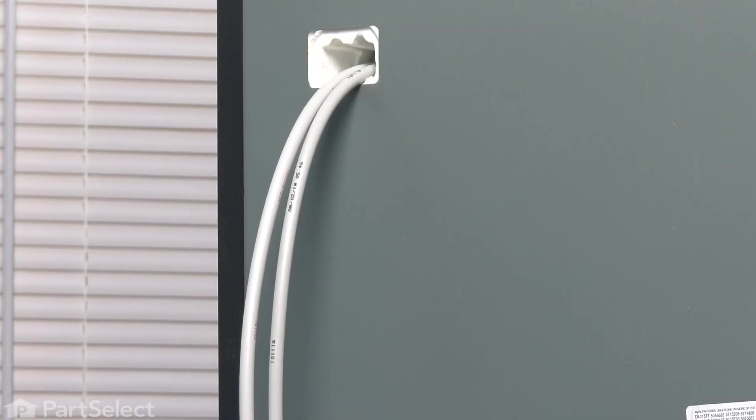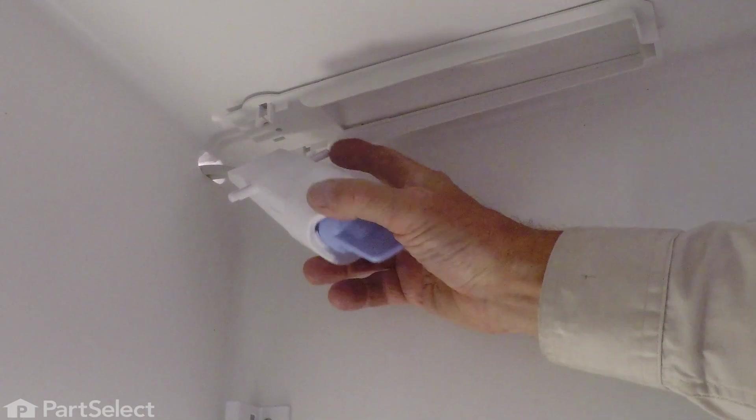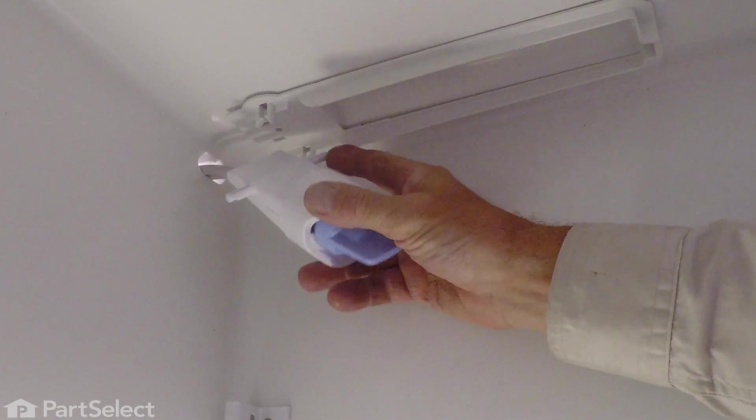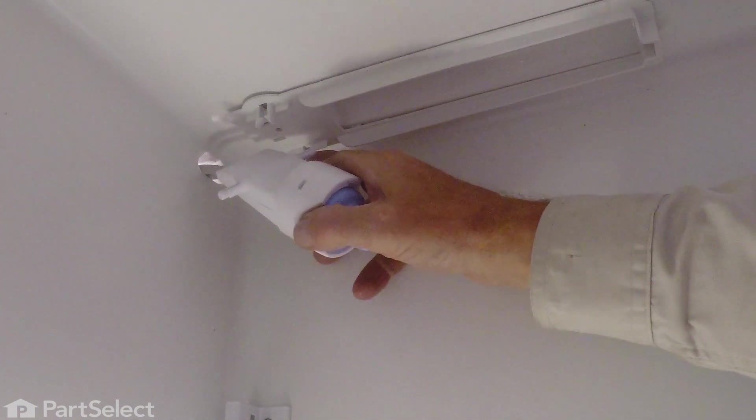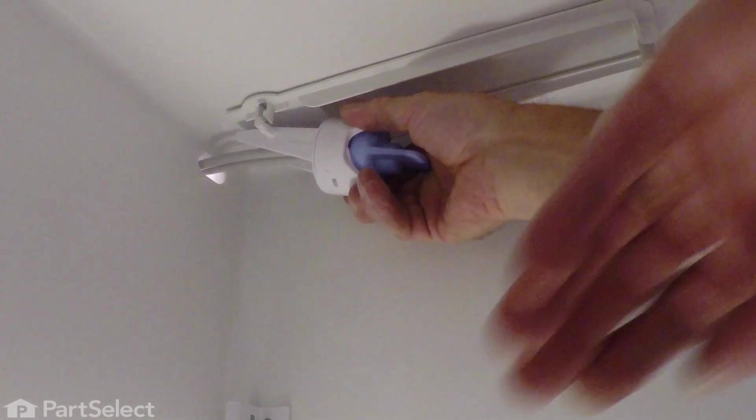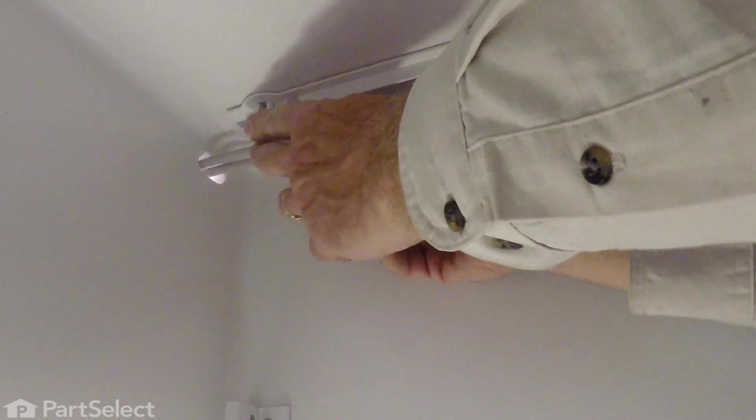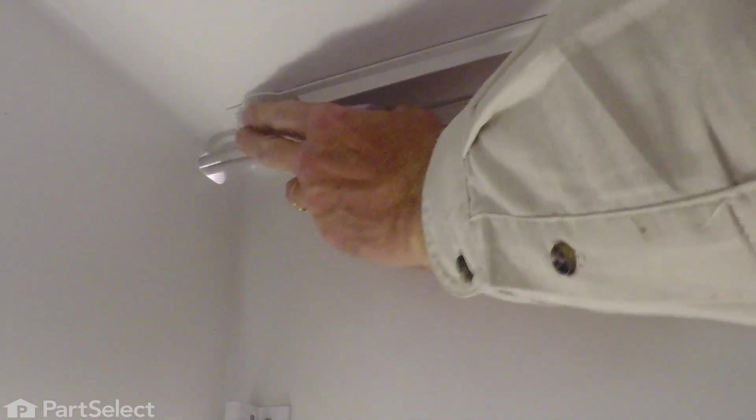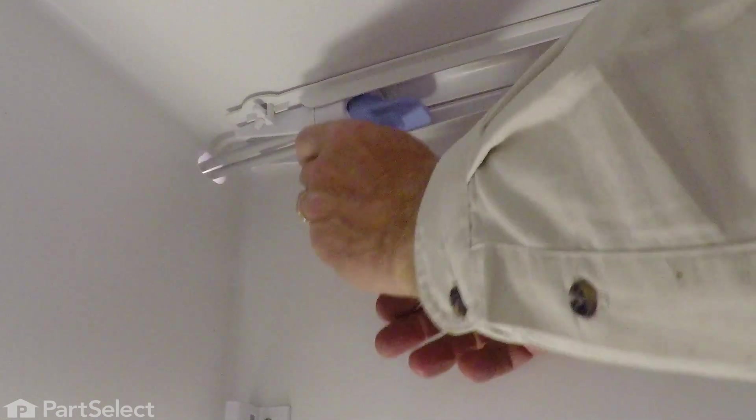Try to leave about the same amount of slack at the top side. We're back in the fresh food section. We're going to take that water head. We'll make sure that we insert that round pin into the opening on that housing.